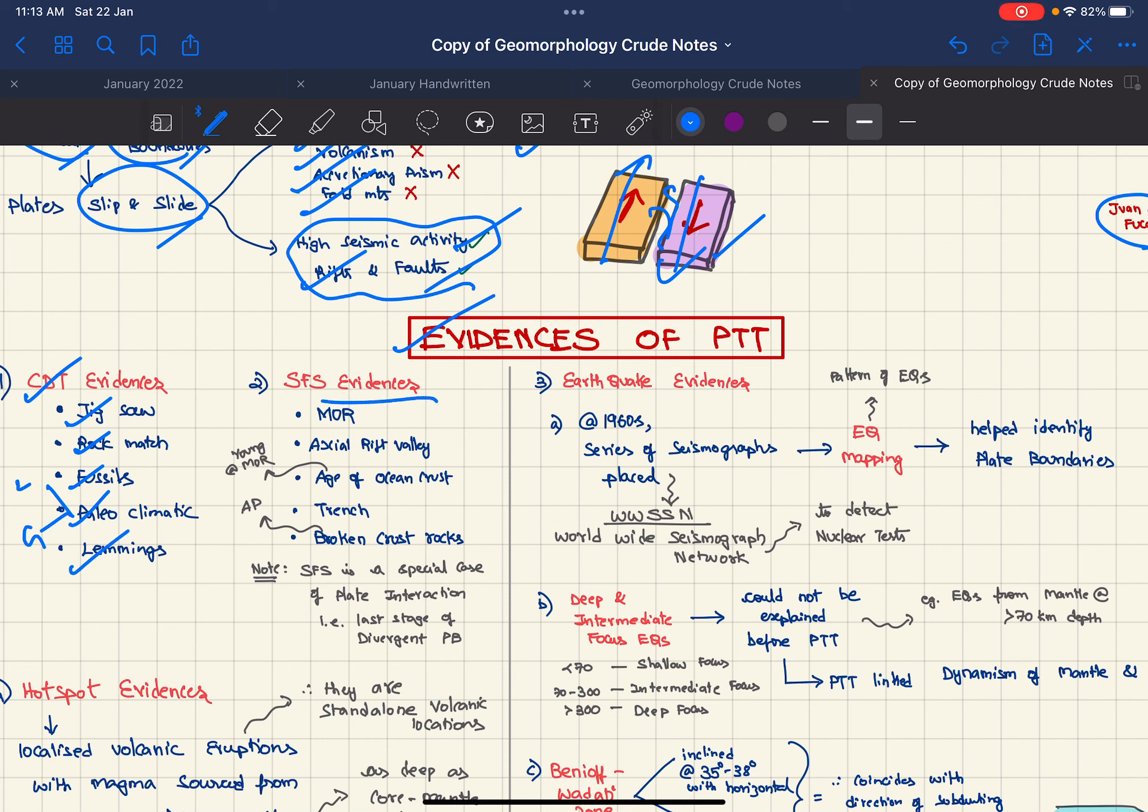For sea floor spreading evidences, we have the presence of mid-ocean ridge with rift valley in it, presence of trench, volcanic and seismic activity. Age of rocks is younger near the mid-ocean ridge and older away from it. Sea floor spreading is a special case of plate interaction as we have seen in divergent plate boundary.